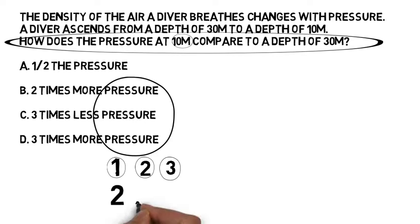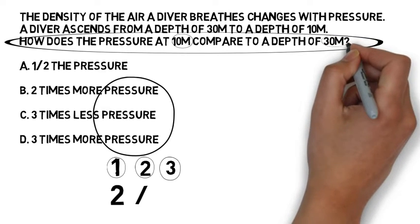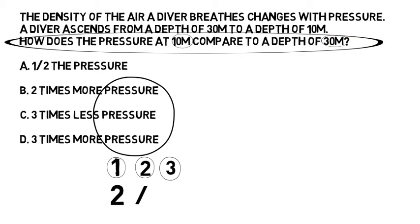Now, this is a comparison question, comparing one depth to another depth. We use divide to do that. And then finally, what's the second depth, the depth we're comparing to? We're comparing to 30 meters. At 30 meters, we have four atmospheres of pressure. So I'm going to write the number four in.